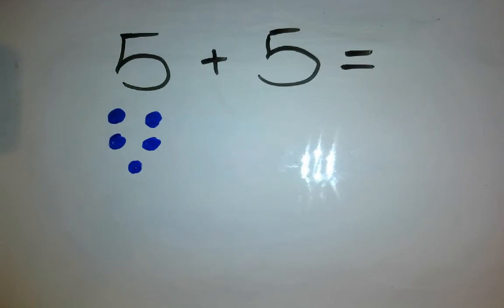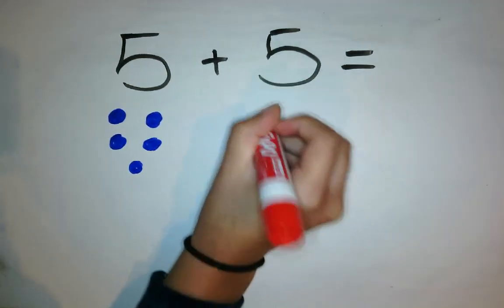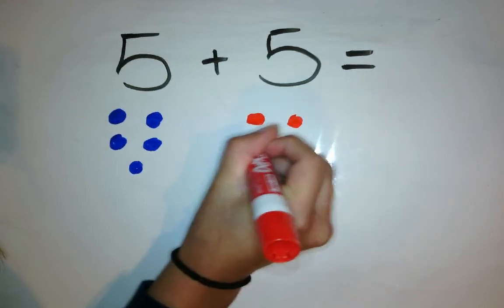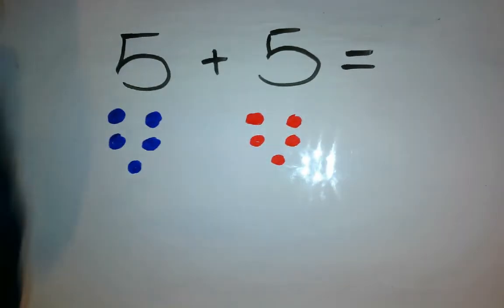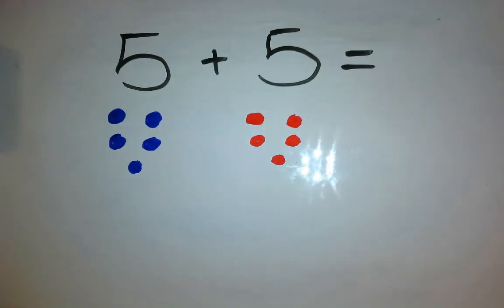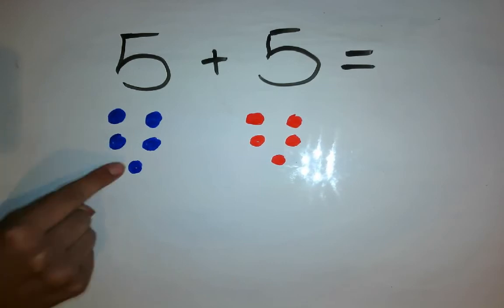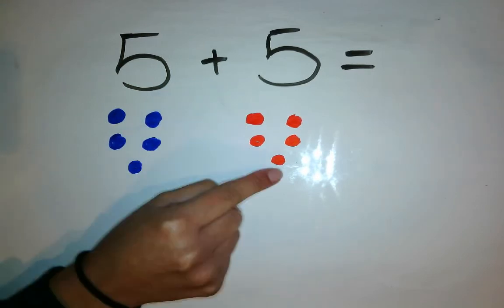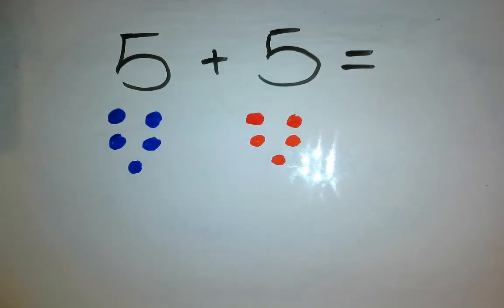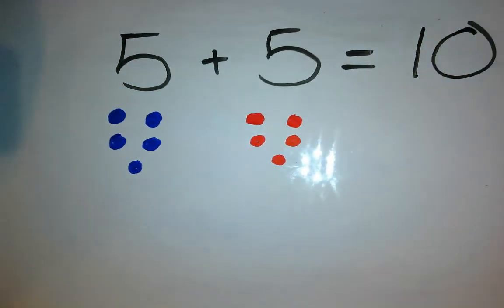Same thing for the red guys, or this number. I need 5 again. 1, 2, 3, 4, 5. Alright, now I simply need to count. So starting with our blue. 1, 2, 3, 4, 5, 6, 7, 8, 9, 10. 10 is my answer.